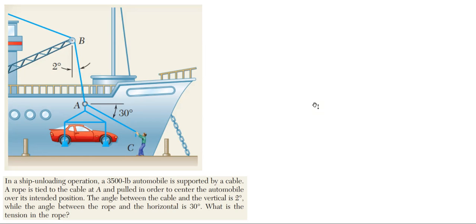We'll be solving this equilibrium problem shown on the screen. We have a ship unloading a car that weighs 3,500 pounds, supported by a cable from A to B. A rope is tied to the cable at point A and pulled over to the center of the automobile over its intended position. The angle between the cable and the vertical is 2 degrees, and the angle between the rope and the horizontal is 30 degrees. What is the tension in the rope?